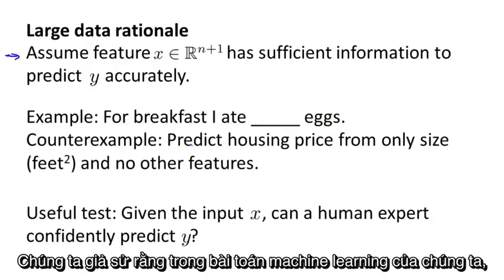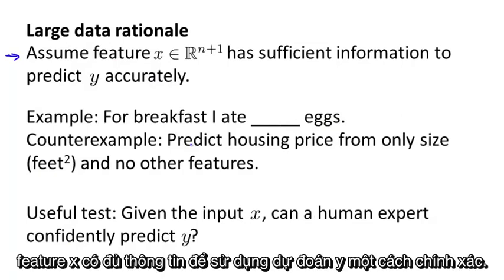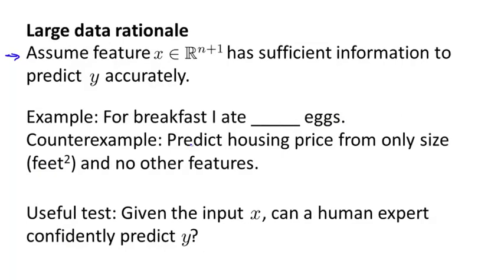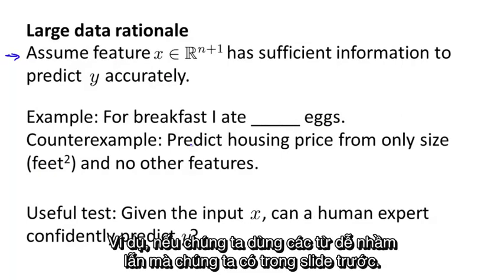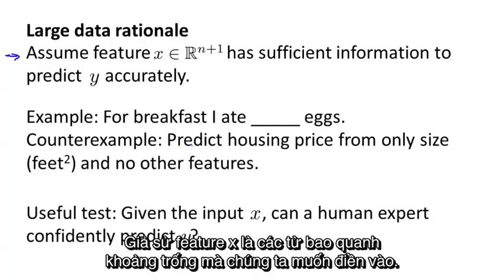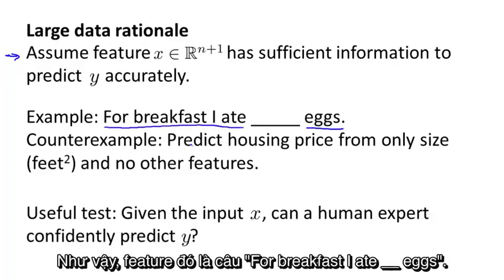Let's assume that in our machine learning problem, the features x have sufficient information with which we can use to predict y accurately. For example, if we take the confusable words problem that we had on the previous slide, let's say that the features x capture what are the surrounding words around the blank that we're trying to fill in. So the features capture that we want to have, we have a sentence 'for breakfast I ate blank eggs.'